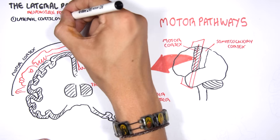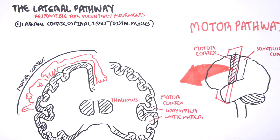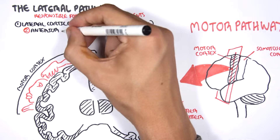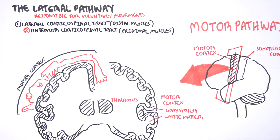The three tracts are: the lateral corticospinal tract, which controls distal muscles such as the forearm; the anterior corticospinal tract, which controls the proximal muscles such as the arm. The anterior corticospinal tract is voluntary but not part of the lateral pathway itself. Regardless, the lateral and anterior corticospinal tracts are very important in voluntary muscle control. The third tract is the rubrospinal tract.